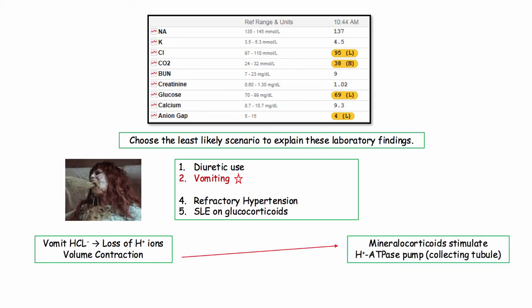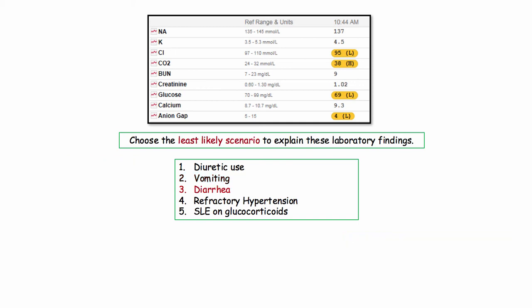And as an FYI, just to underscore alkalosis associated with vomiting, this state is also associated with volume contraction. Volume contraction, in turn, will stimulate aldosterone secretion. So the answer to question one is diarrhea.